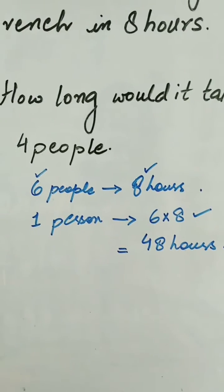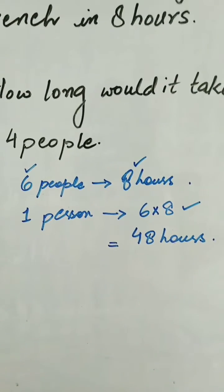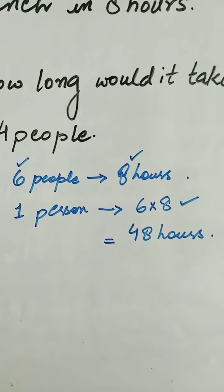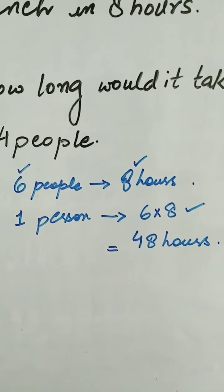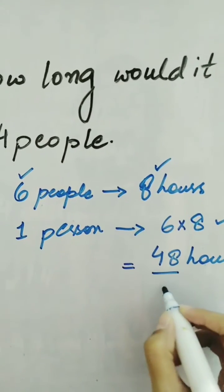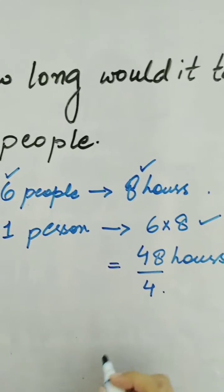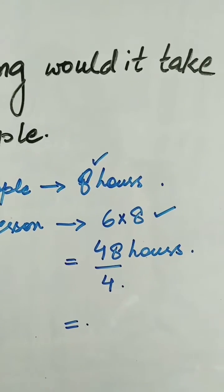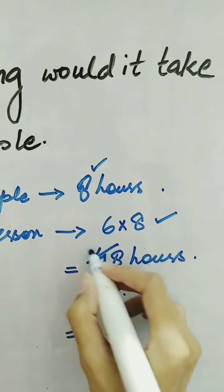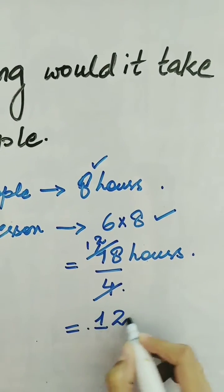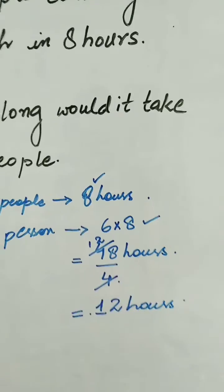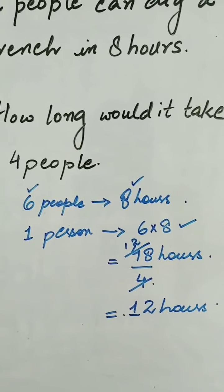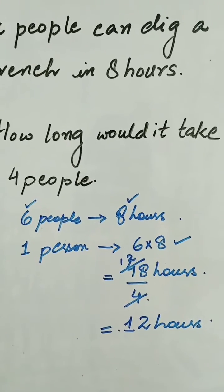So one person can do the same task in 48 hours. For 4 people, we take the total hours for one person and divide by 4, which gives us 12 hours. So the trench that was dug by 6 people in 8 hours can be dug by 4 people in 12 hours.